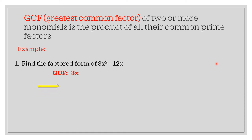So therefore, the factored form of this given expression is 3x times the result of dividing each term by 3x. So 3x squared divided by 3x is x, then copy the negative sign, and 12x divided by 3x is 4. So the factored form of 3x squared minus 12x is 3x times (x minus 4).